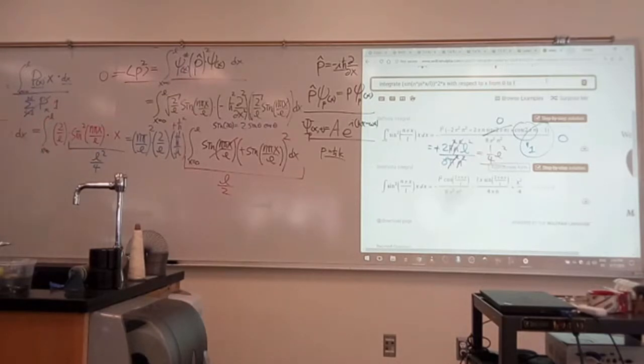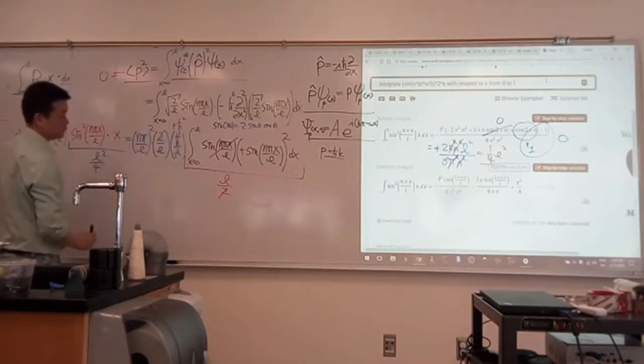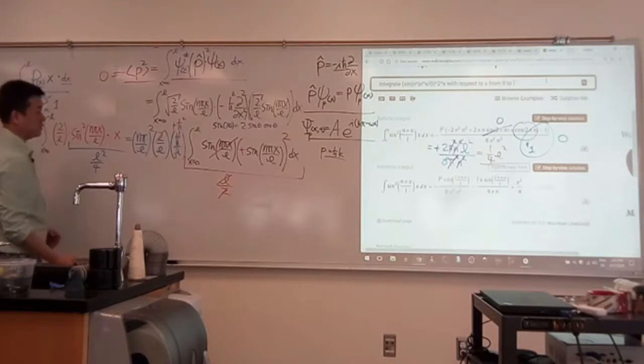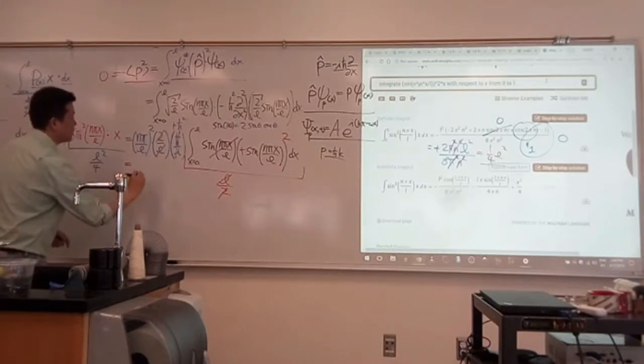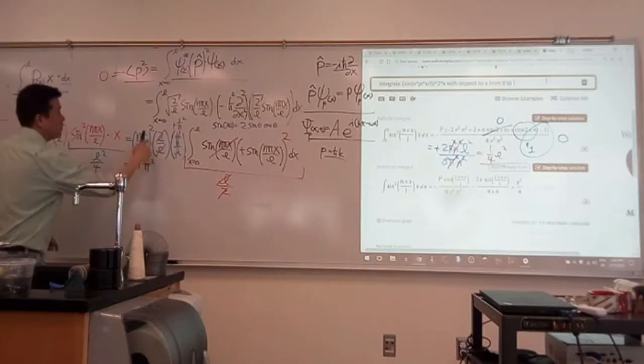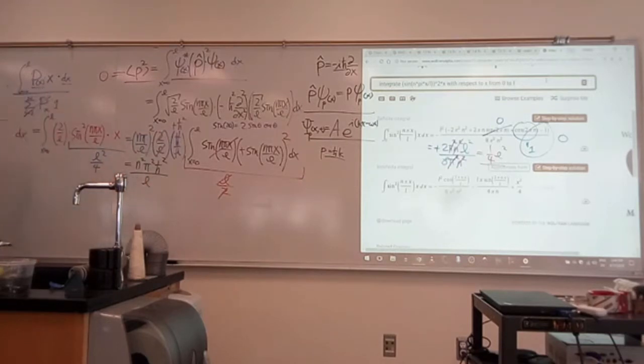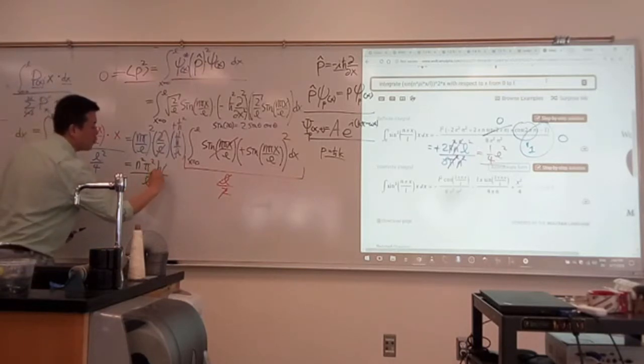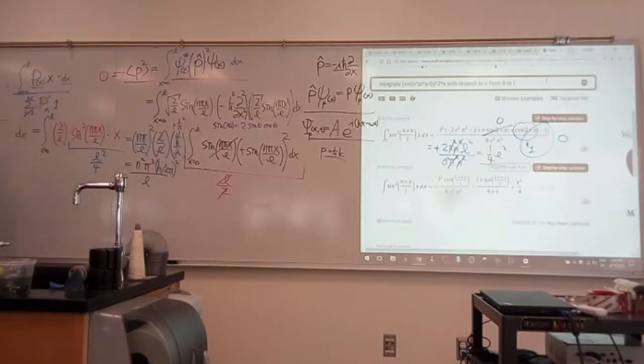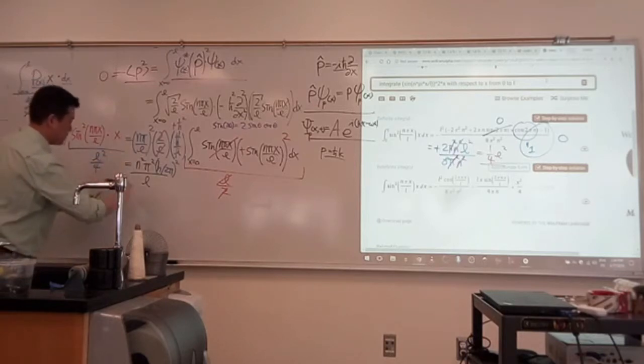We just work out all the factors to see what cancels. This two cancels this two. This L cancels this L. So collecting the remaining factors, we have N²π²ℏ² over L². Is that the correct answer? If you're not sure, you can rewrite ℏ as h over 2π. L squared.